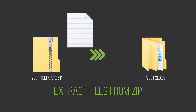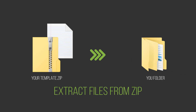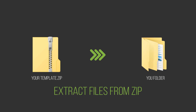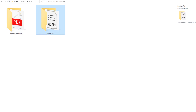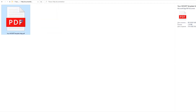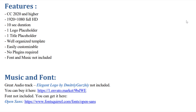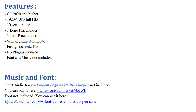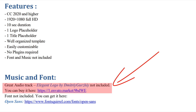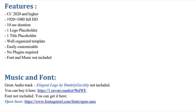Before we begin, unzip the archive with the template into the folder of your choice. You need to keep the structure of the files and folders the same as in the archive. Check the help file. In this file, you will find the links to the fonts you need to install for the template to work properly. The help file also contains links to the music and images used in the previews and other useful materials.